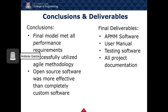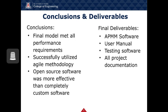In conclusion, the final iteration of the avionics predictive maintenance model met all functional and performance requirements. The team successfully utilized agile methodology to work through the project and overcome any roadblocks. A major lesson learned was the value of open source software for AI implementation instead of creating completely custom software. Final deliverables to project sponsor L3Harris include the avionics predictive maintenance model software, a user manual, testing software, and all project documentation.